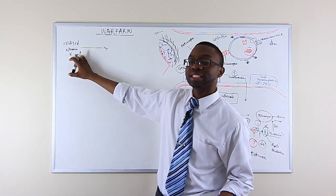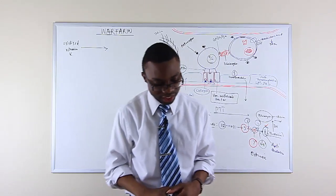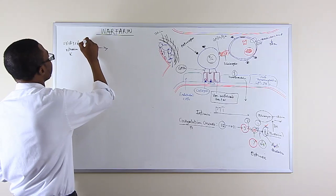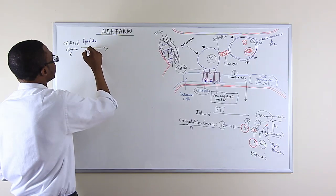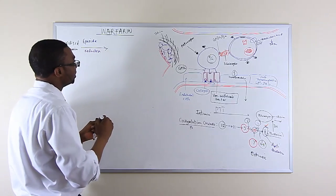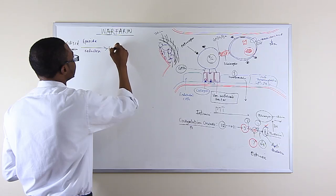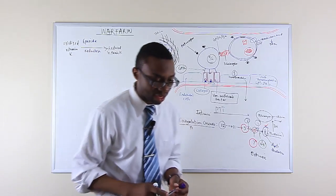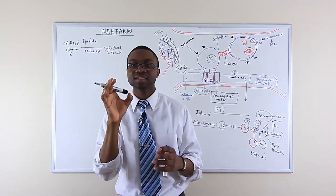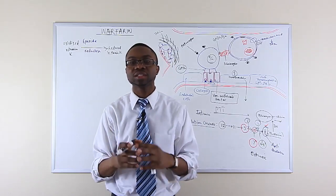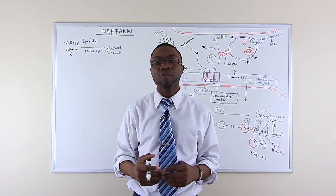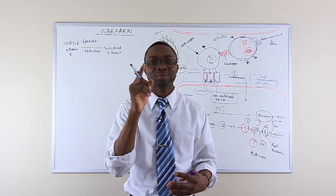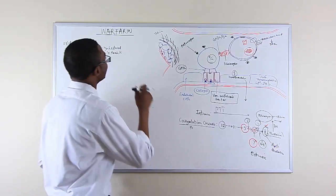So oxidized vitamin K is actually converted and activated into reduced form by epoxide reductase. And then we have a reduced form of vitamin K. Now this vitamin K is now going to act as a cofactor. It's a cofactor that now takes the precursors of factor 2, factor 7, factor 9, factor 10, and there's more - protein C and S.